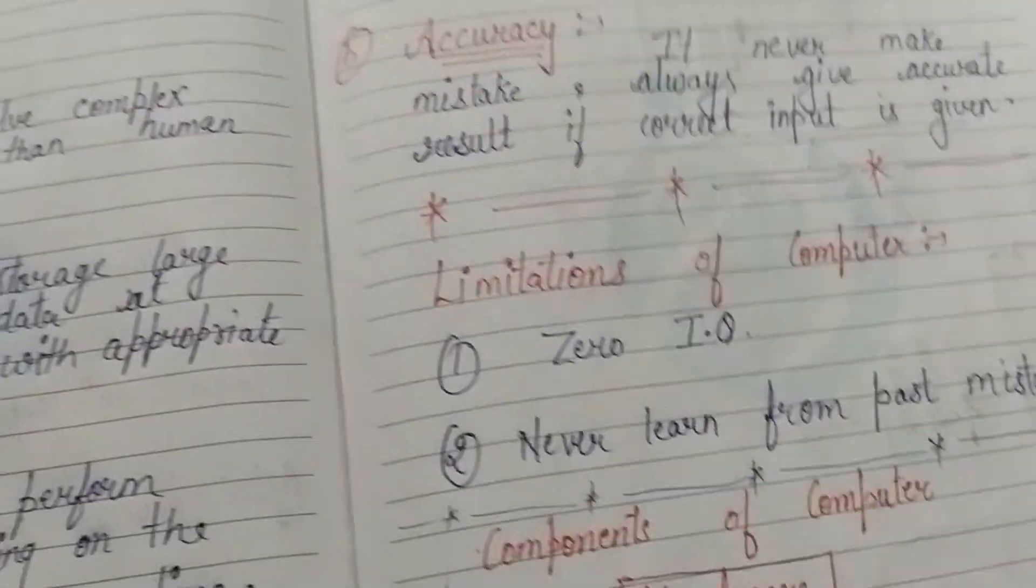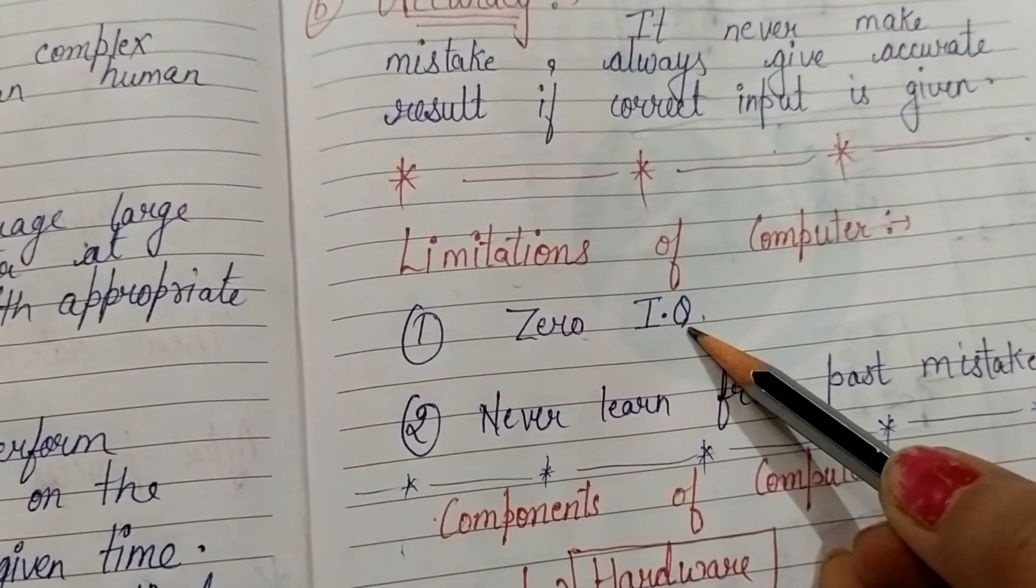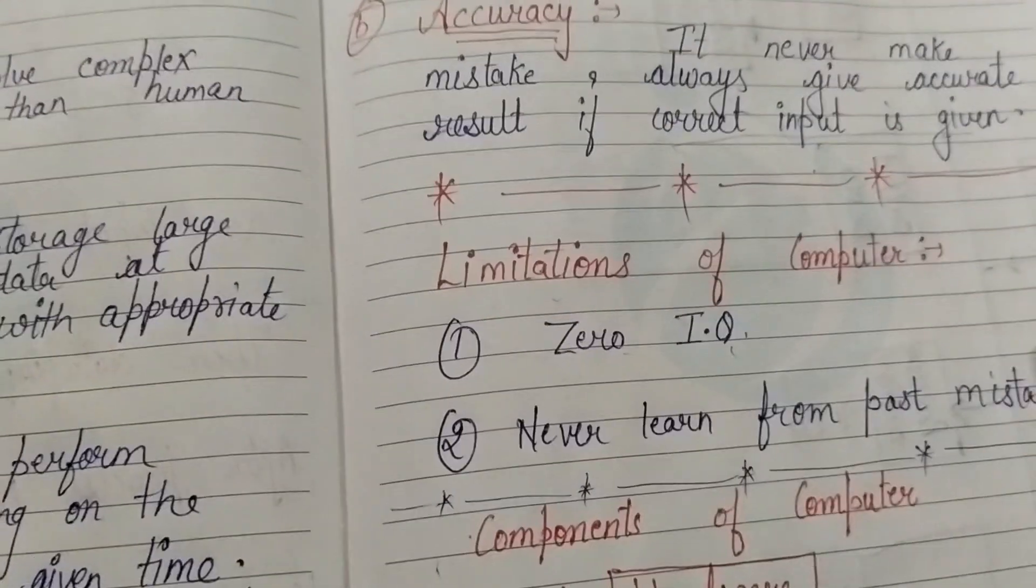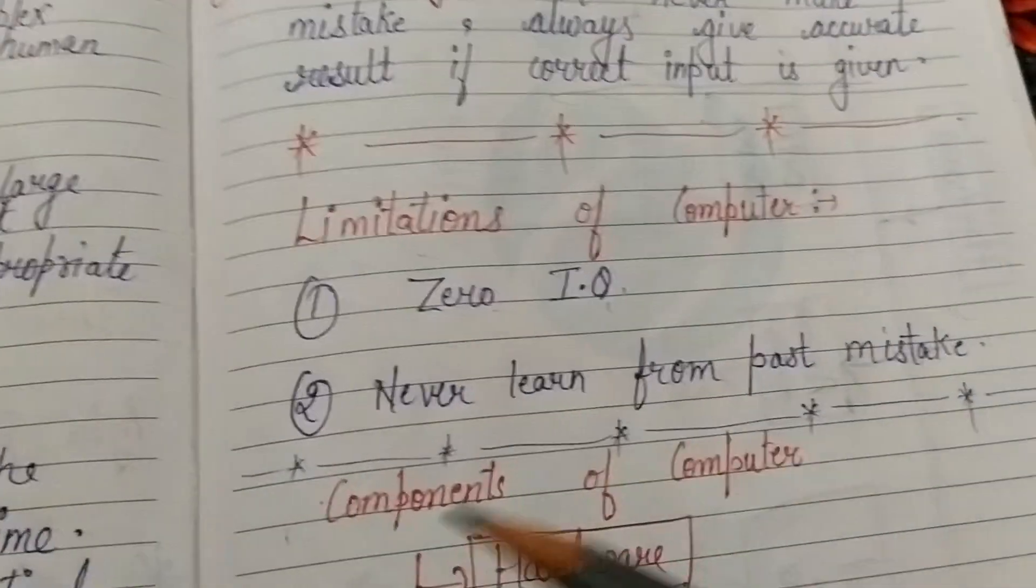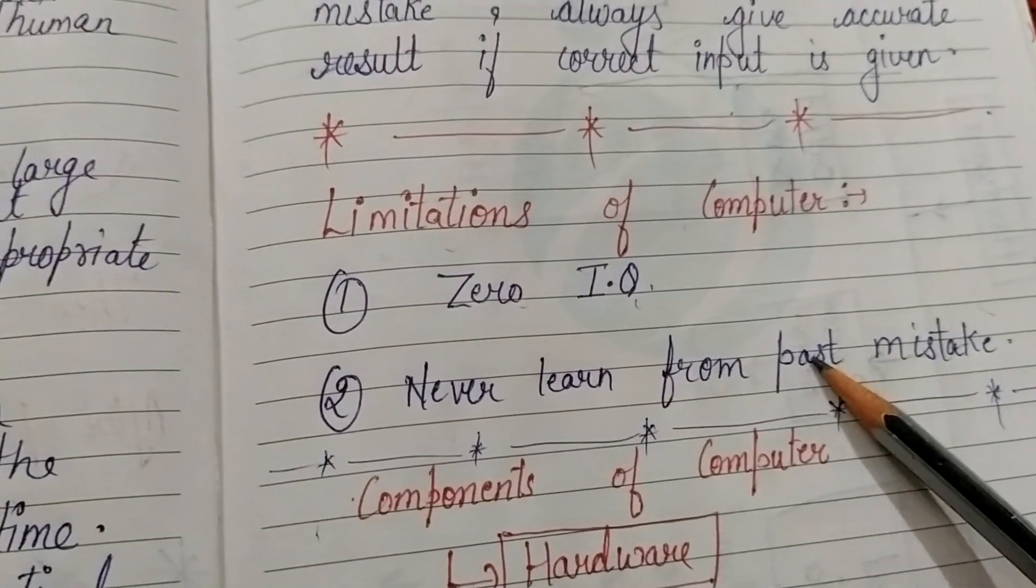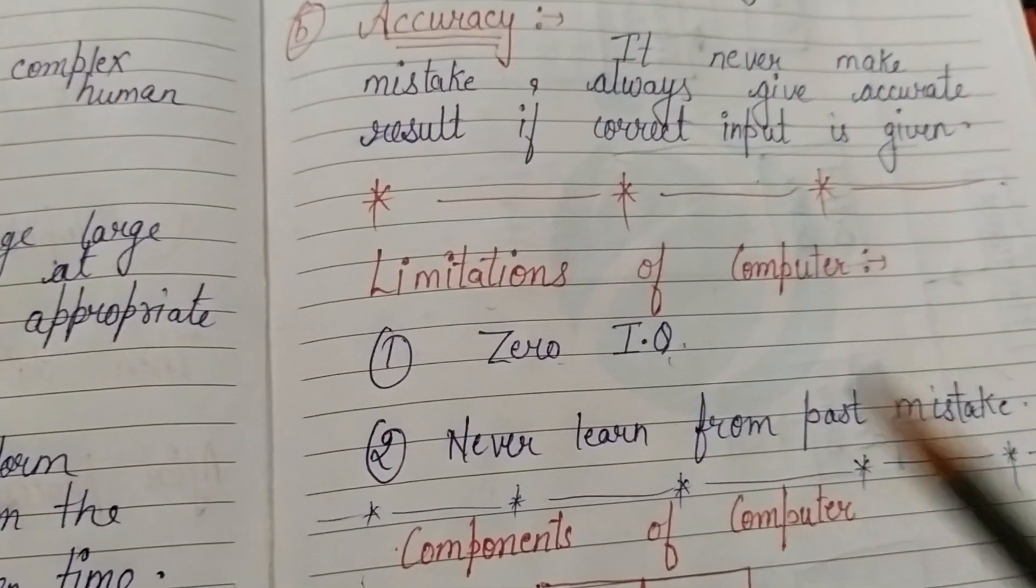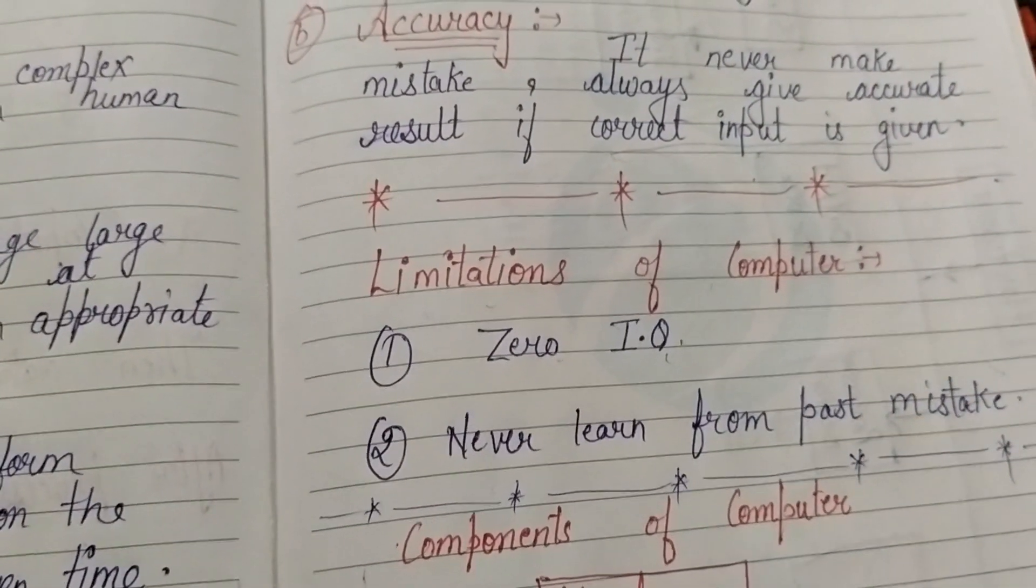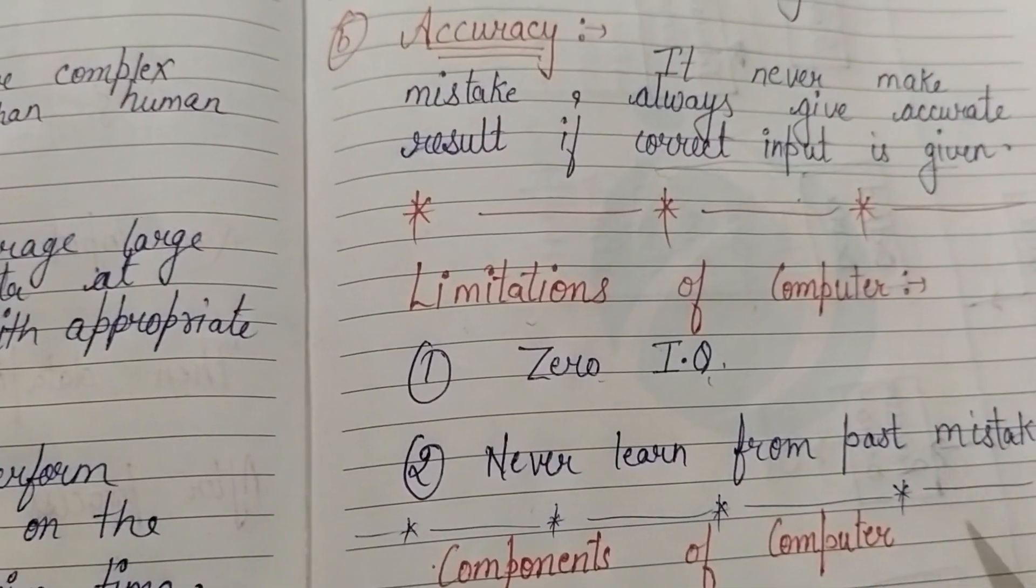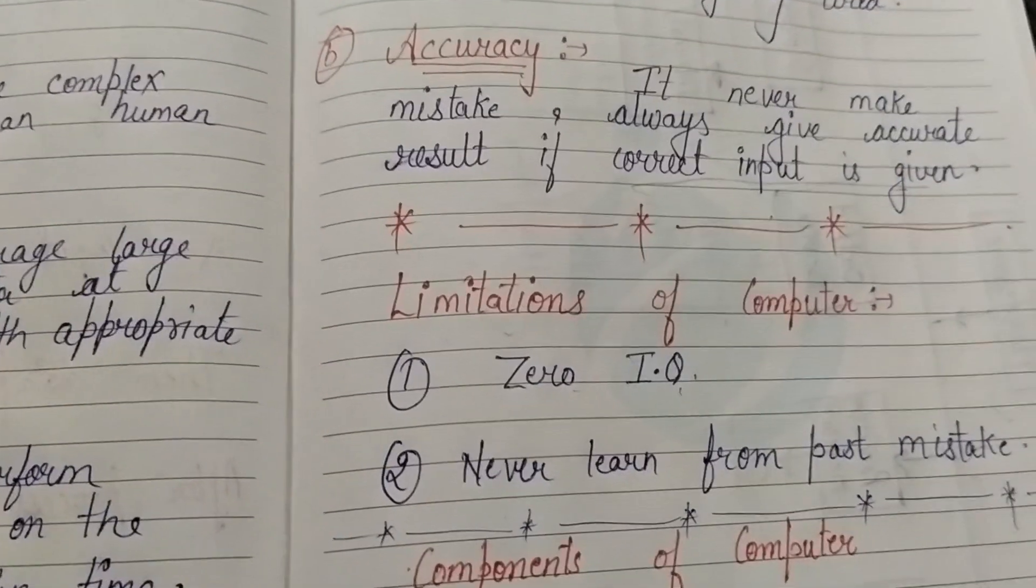Along with these, there are some disadvantages, that is limitations. Computer also has some limitations: Zero IQ—it cannot think on its own, we have to command it. Its decision-making power is zero. Second, never learns from past mistakes. If it made a mistake in a past question, if you give the same question again, it will repeat the same mistake again and again, unless we correct the input. This means it doesn't understand anything from its past mistakes.